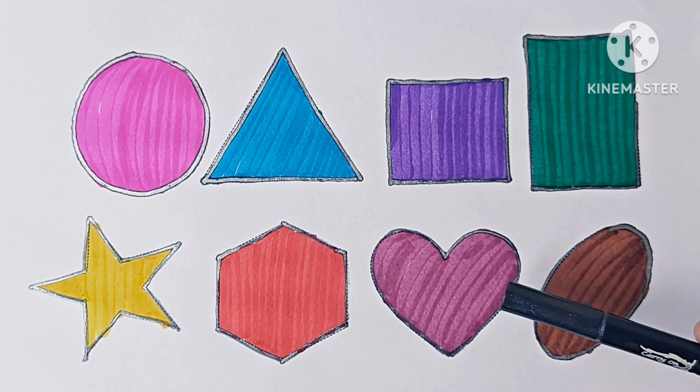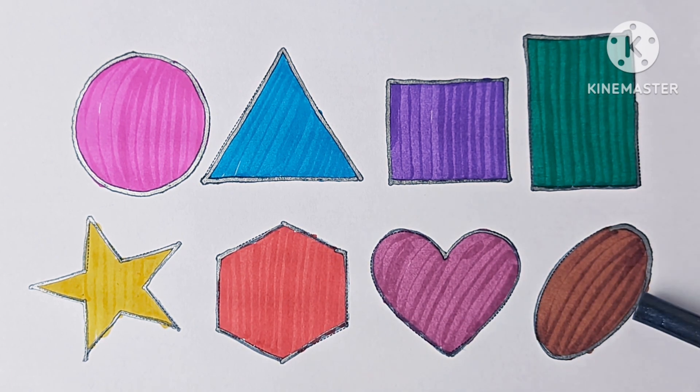It is 2D shape. It has 6 sides. This is heart, it is a shape. This is oval, it is also 2D shape and has no sides.